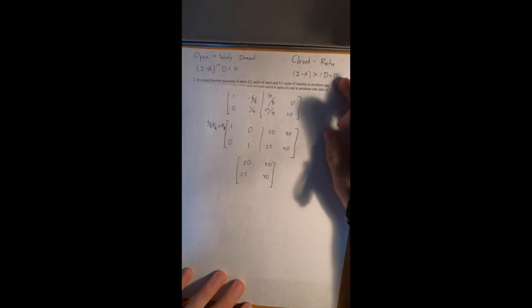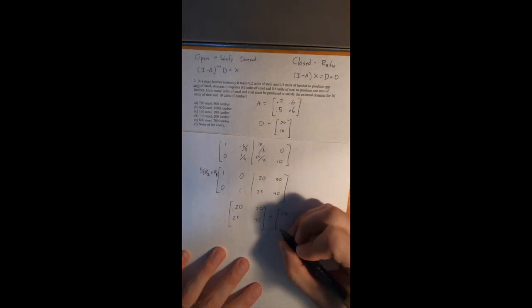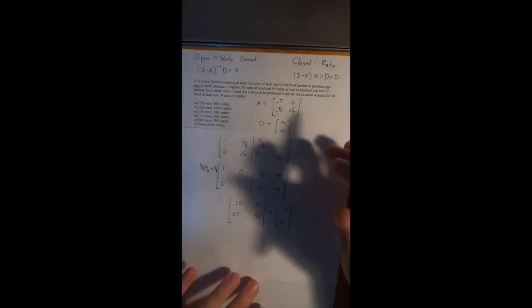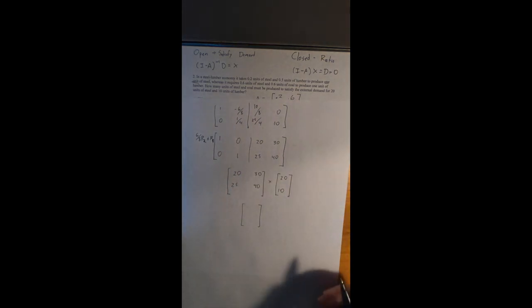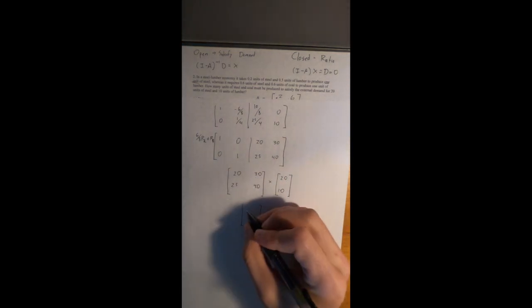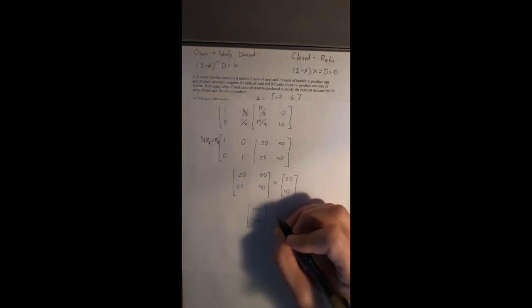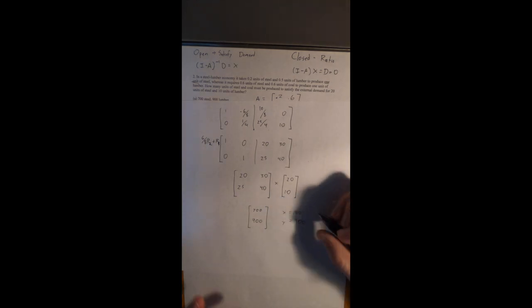Our next step is to multiply the inverse by the demand [[20], [10]]. We do row by column, giving a 2×1 result: 20×20 + 30×10 = 700, and 25×20 + 40×10 = 900. So X = 700 (steel) and Y = 900 (lumber). The answer is A.